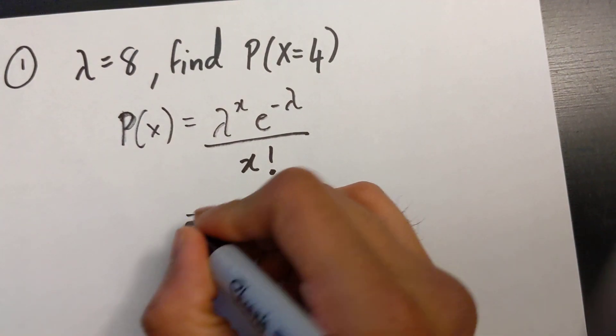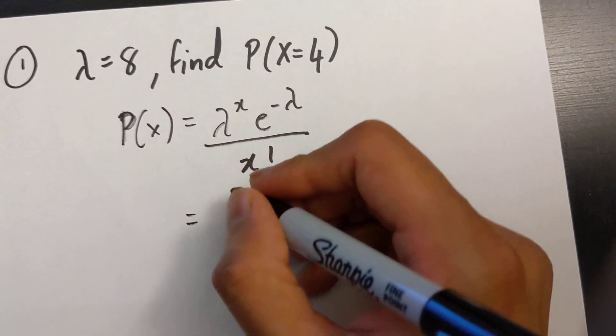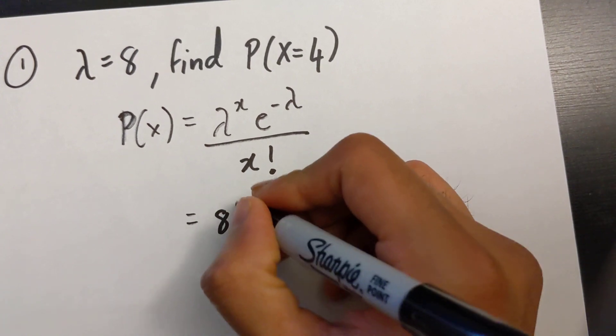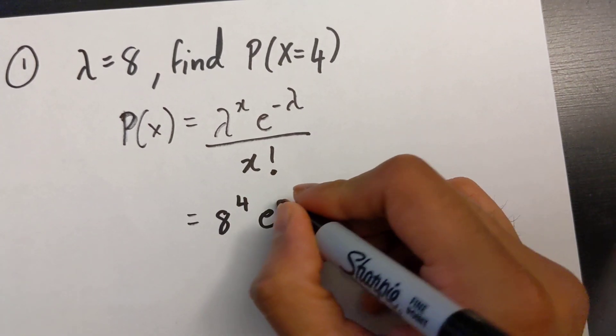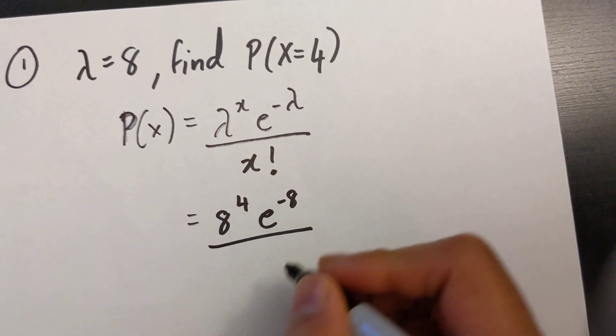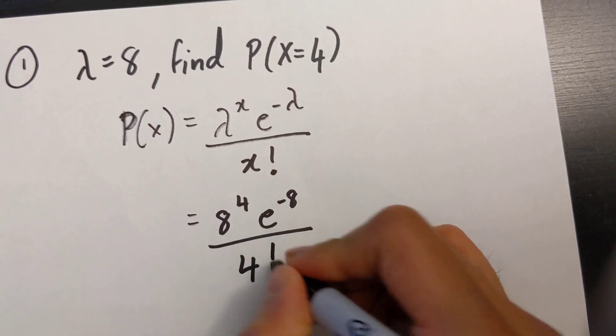I'm going to sub all my variables into this equation. So 8 to the power of 4 e to the power of negative 8 over 4 factorial.